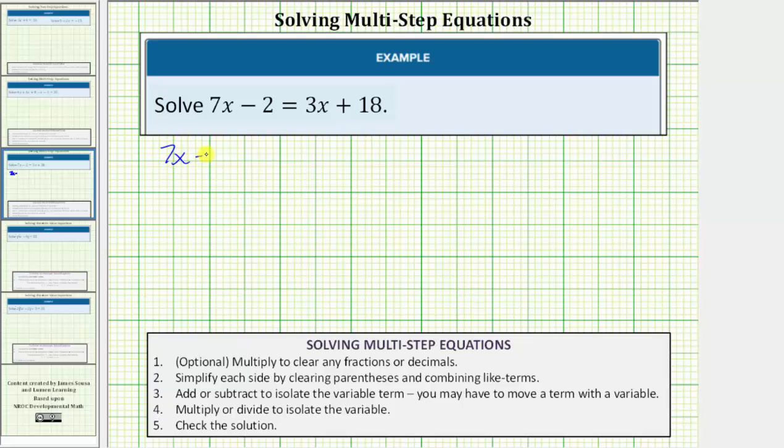We want to solve the equation 7x minus 2 equals 3x plus 18. The solution is a value of x that satisfies the equation or makes the equation true. So for this equation, the solution is a value of x that makes the expression 7x minus 2 equal to the expression 3x plus 18.